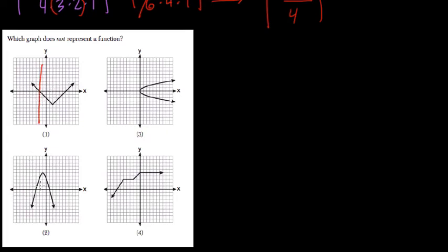So in all cases here, anywhere you draw a vertical line, you get to cross once — except for choice three. If you draw here, here, or here, or really anywhere except at the vertex, we get two results.